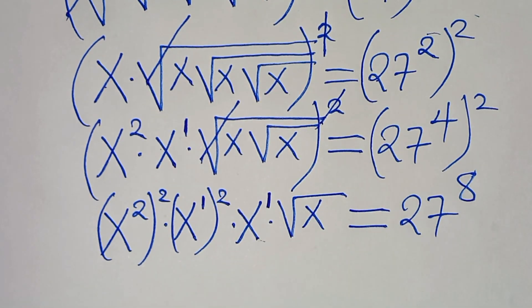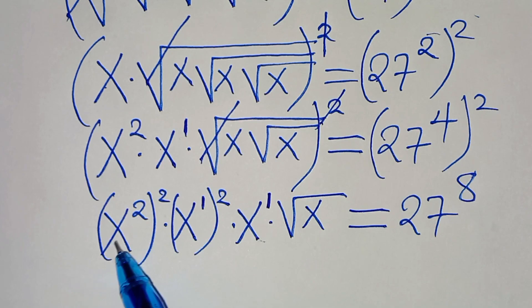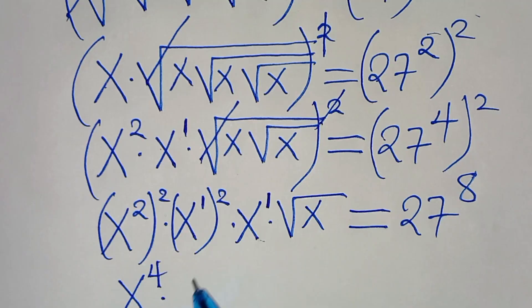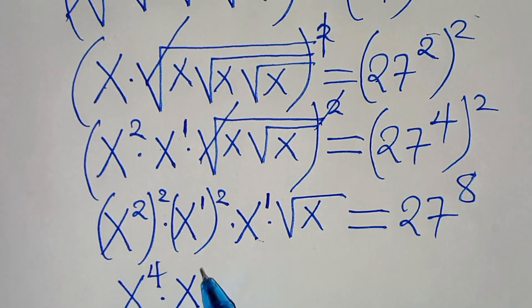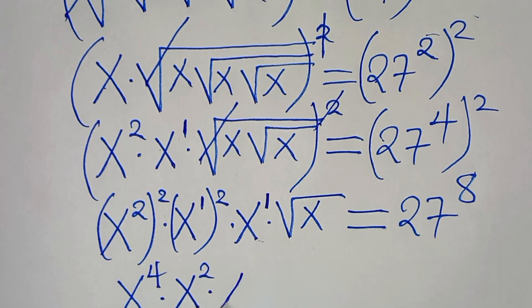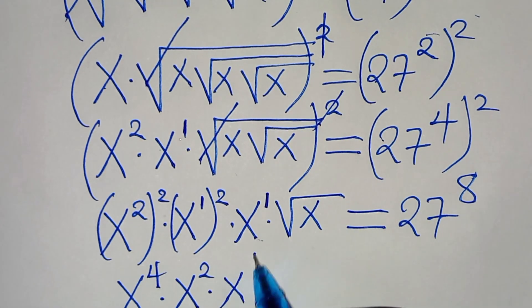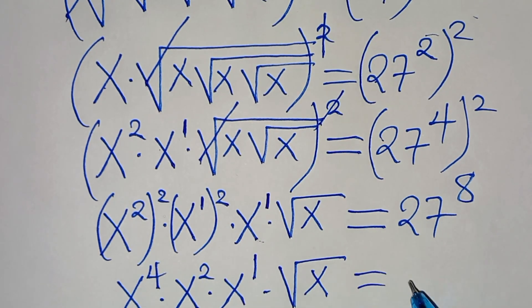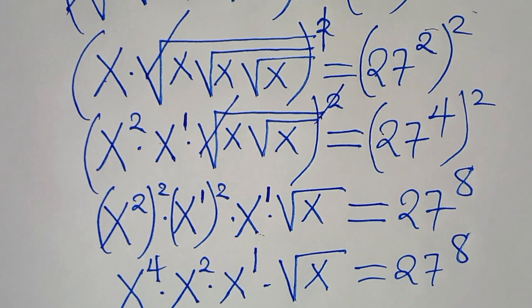Now x squared raised to the power of 2 gives x to the power of 4, multiplied by x to the power of 2, then multiplied by x to the power of 1, multiplied by the square root of x. This is equal to 27 raised to the power of 8.